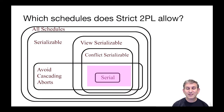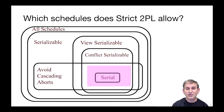Now which schedules does strict two-phase locking allow? You might hope it would allow all the conflict serializable schedules but it doesn't. Here's a Venn diagram of schedules and what's possible with different definitions. There's all possible schedules as the outermost blob. Within that is a subset that are serializable, and within that we have conflict serializable schedules — a subset of the view serializable schedules, which are more permissive and allow blind writes. There are also schedules that avoid cascading aborts. Strict 2PL gives us roughly the overlap between those two — the pink square in the middle.